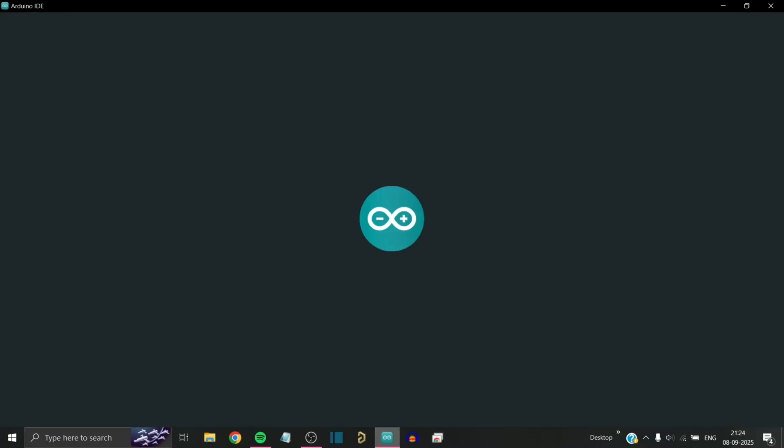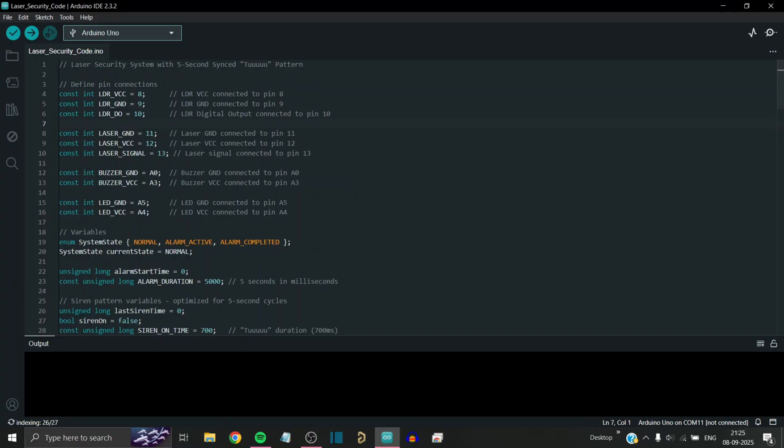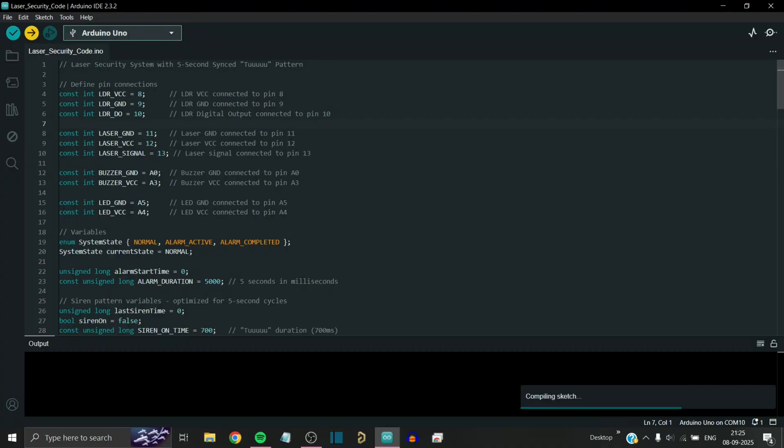Open the Arduino IDE, copy and paste the code I have provided in the description, select the correct Arduino board and port, then simply click on upload. You will see the code is compiling and uploaded successfully.